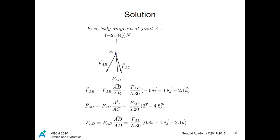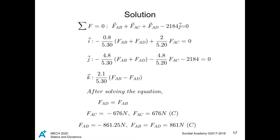Now we will analyze each individual joint. Let's start with joint A, since it is directly loaded upon. From joint A, we assume that all unknown forces are in tension. From here, we find the unit vector of the beams and multiply them with the respective unknown beam force magnitudes to generate the force vectors. From here, we set up a system of equations to solve each beam force based on the force equilibrium of each axis.